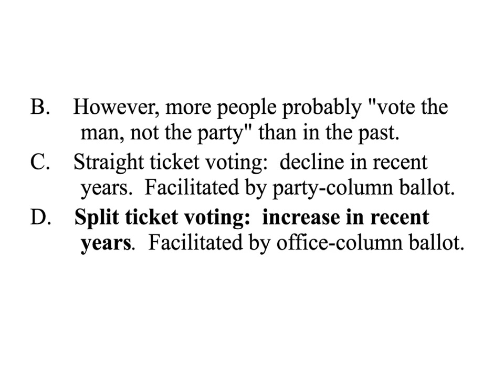Straight-ticket voting is when you vote for one party all the way down — for president, governor, state senate, national senate, House of Representatives — all Republican or all Democrat. Some ballots make this easy by dividing candidates by party. Split-ticket voting is when you vote for, say, a Democrat for president but a Republican senator you like — mixing parties. This is more common with office-column ballots where it's listed office by office rather than separated by party.